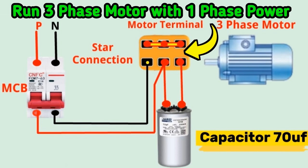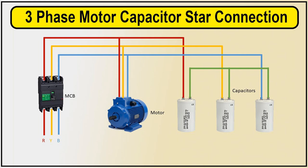Fixed capacitors are relatively simple in design, consisting of capacitor elements enclosed in a protective casing. They do not have adjustable capacitance settings like variable capacitors. Fixed capacitors are typically more cost effective compared to other types of power factor correction capacitors, making them a popular choice for applications where the load characteristics remain relatively constant.